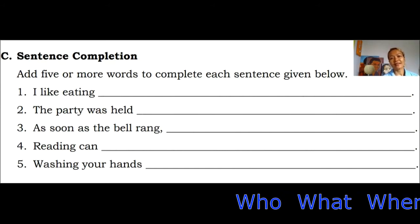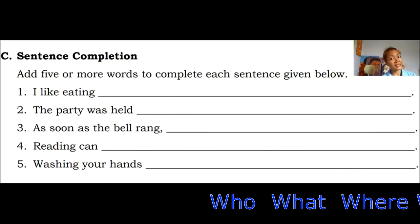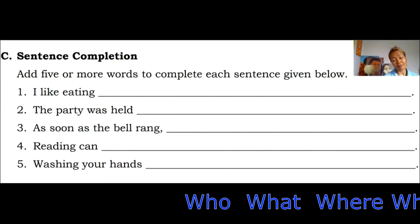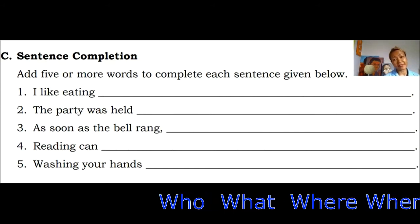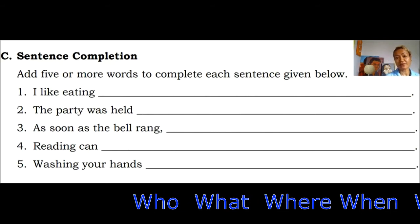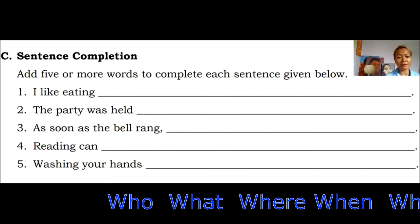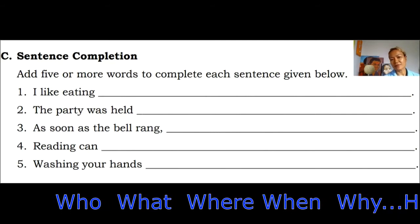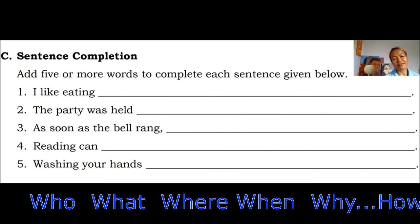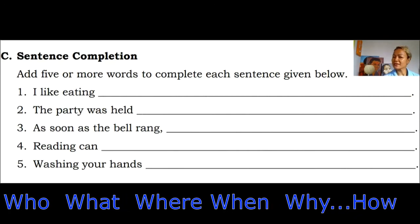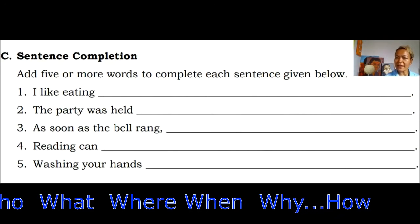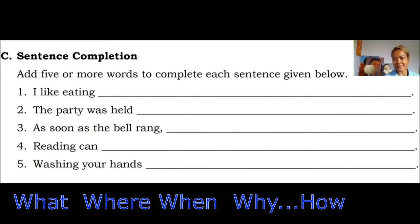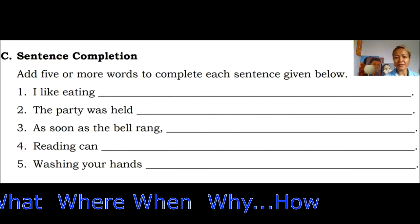And there's a bonus one: how. That makes it six, but how doesn't start with W. Some say there are seven W's, but it's those main six elements — the five W's plus how.